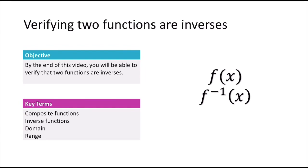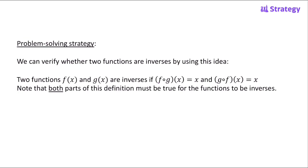In this video, we're going to talk about how to verify that two functions are inverses. We can use this idea: two functions f of x and g of x are inverses if f of g of x equals x and g of f of x equals x. It's very important to remember that both parts must be satisfied in order for the two functions to be inverses.